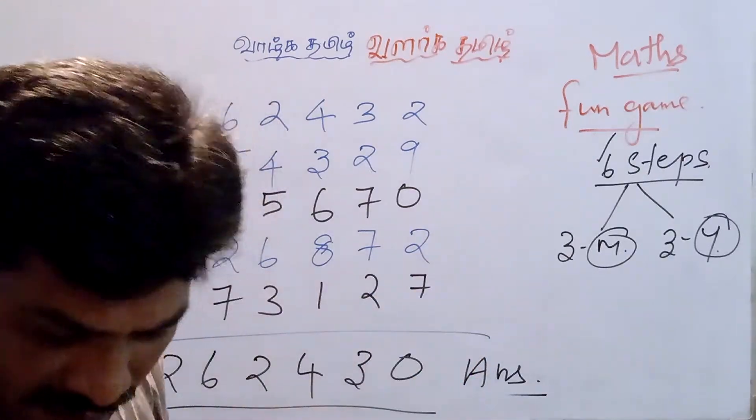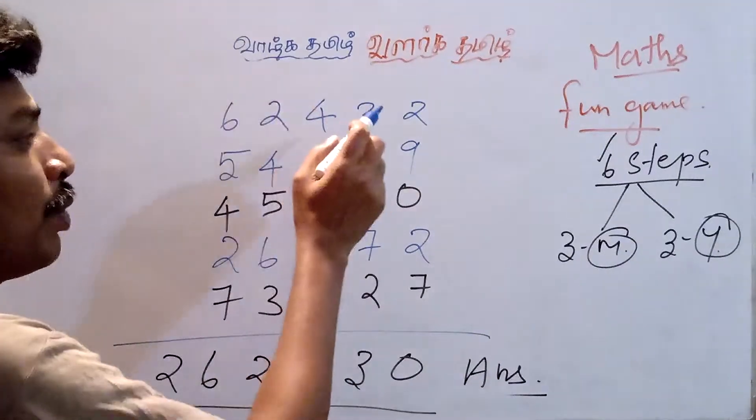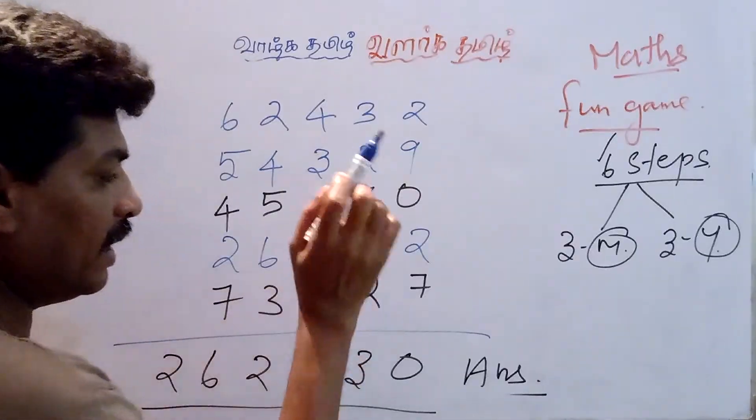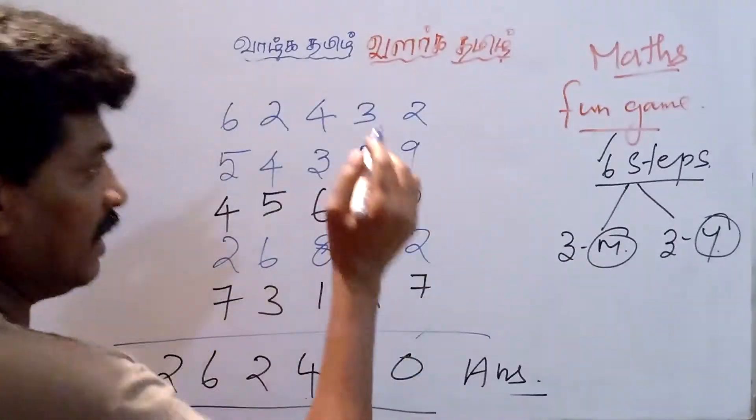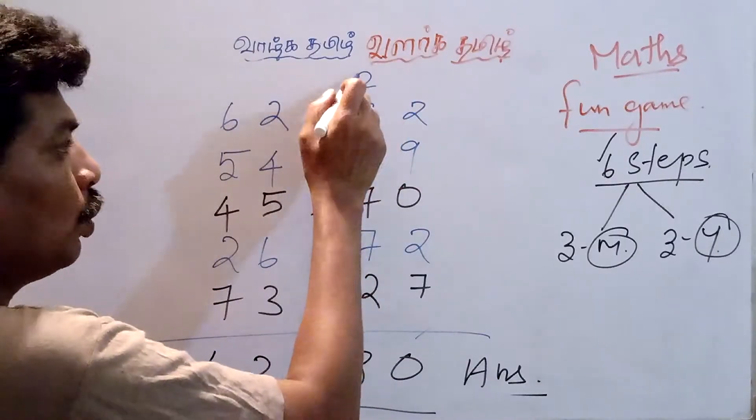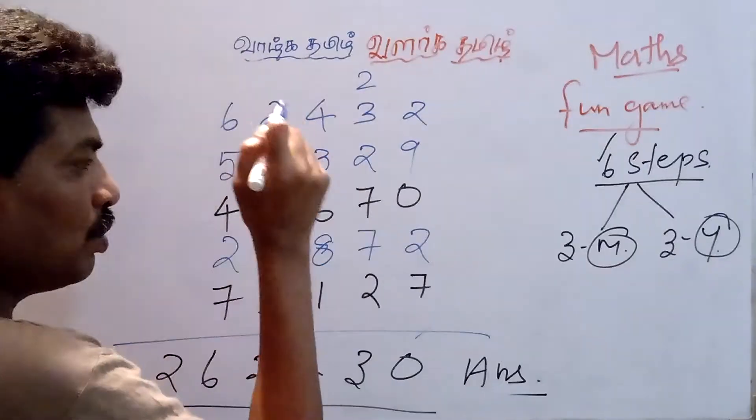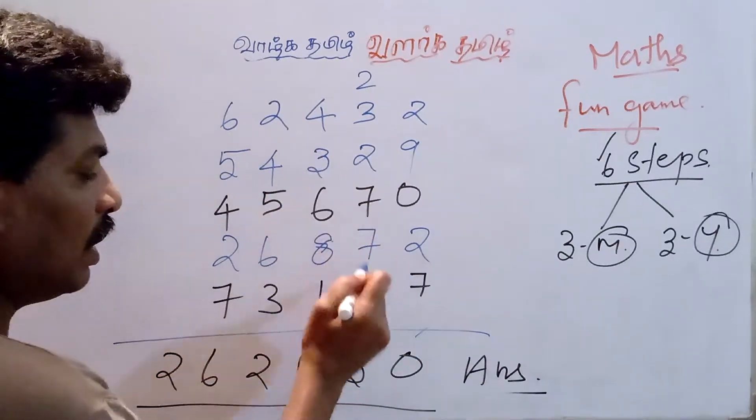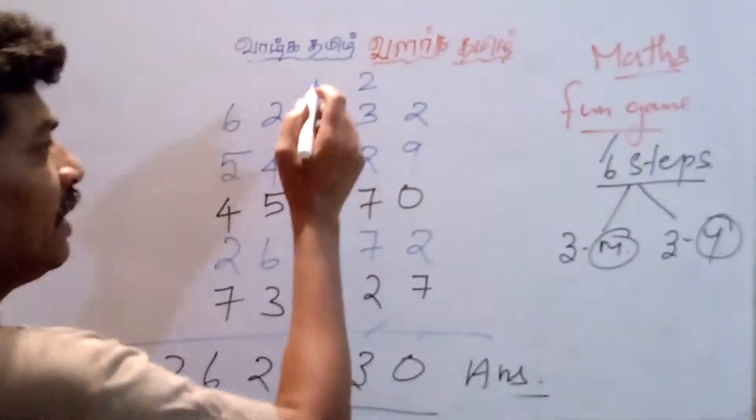Now I am going to add the numbers. 2 plus 9 is 11, plus 2 is 13, plus 7 is 20. Carry over 2. 2 plus 3 is 5, plus 2 is 7, plus 7 is 14, plus 7 is 21, plus 2 is 23. Carry over 2.